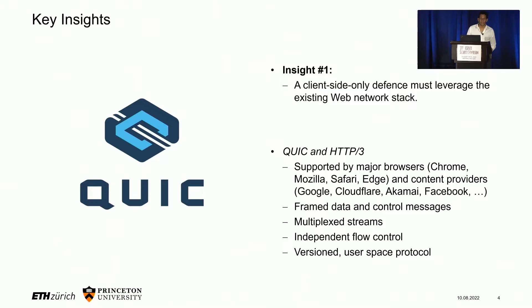In trying to find a way to do this, we leverage three key insights. The first is that a client-side-only defense must leverage the existing web network stack. Since we are deploying this only at the client, we cannot rely upon anything being changed at the server or any new deployments in the network, so we have to leverage what is already there. For this, we utilize both the QUIC and HTTP/3 protocols, which are new additions to the web network stack providing new functionalities such as new control messages for manipulating flow between client and server, the fact that QUIC is deployed in user space and can be modified on a per-application basis, as well as multiplexing multiple individual byte streams. Furthermore, these protocols are already deployed by most major browsers and large content providers.